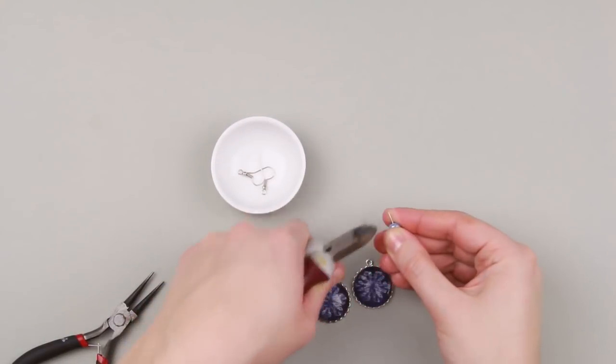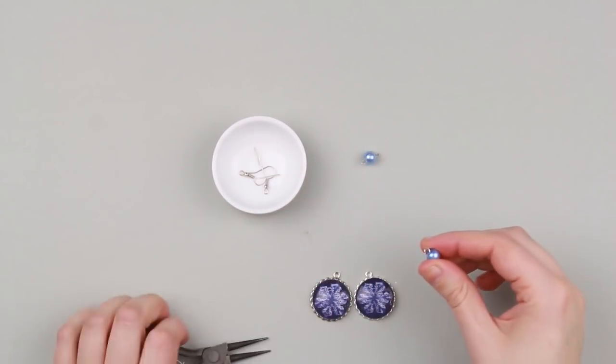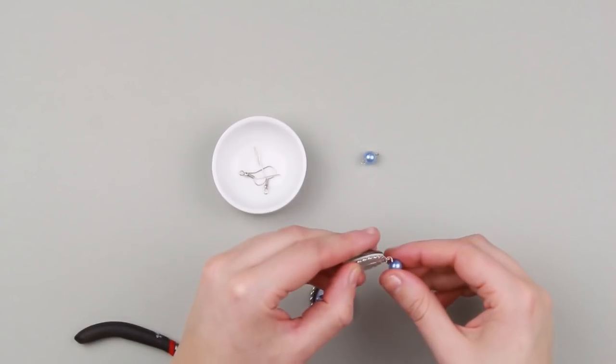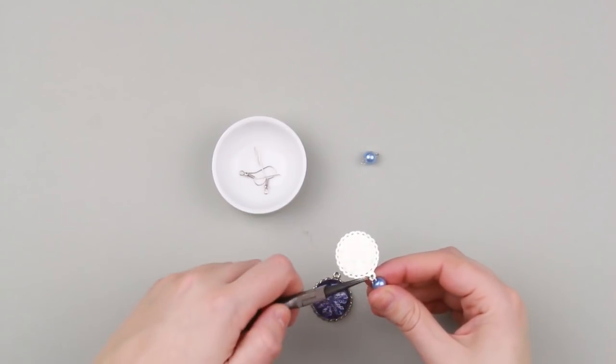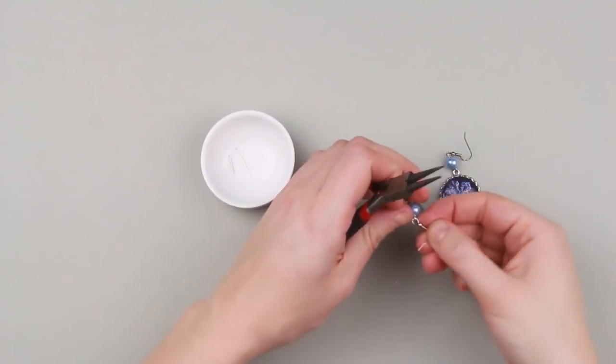Cut off the excess. Make loops. Open a loop and secure to the earring base. Attach a hook clasp.